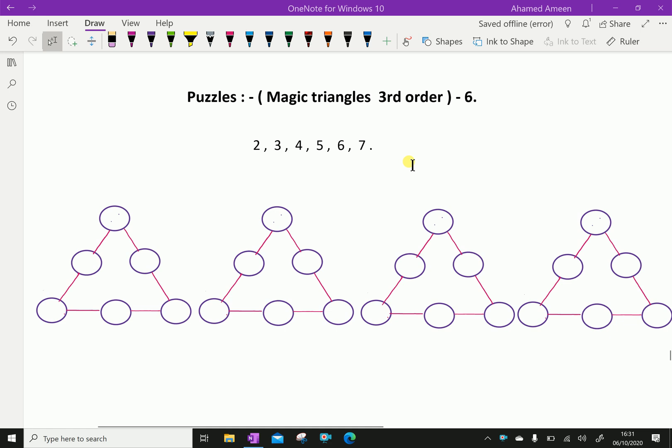Now let us make our own magic triangles with given numbers. Here the given numbers are 2, 3, 4, 5, 6, 7. You have to fill these numbers once in one space and we should get a particular sum. In every case, it should be the same answer. That means by using this addition or this addition or this addition with other triangles also.